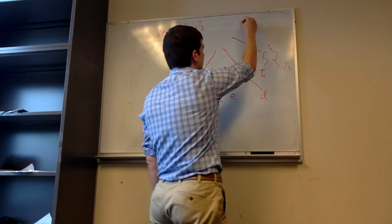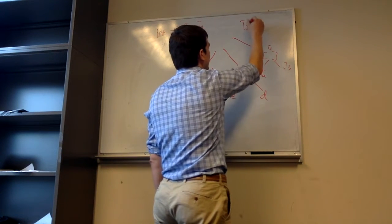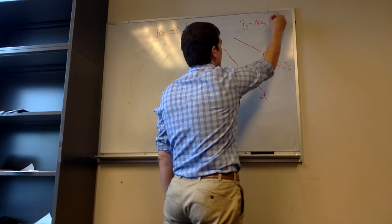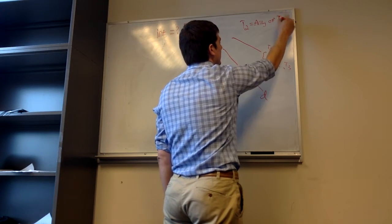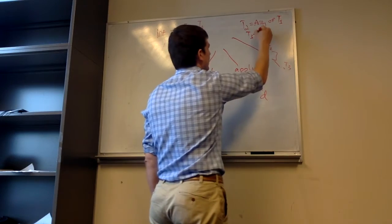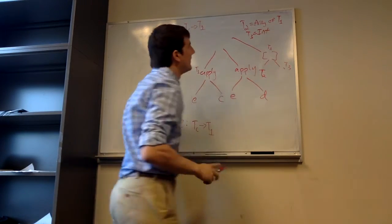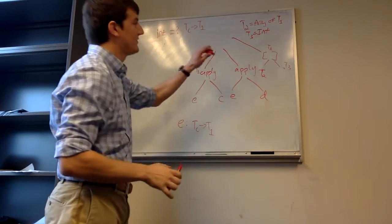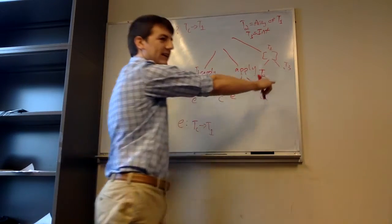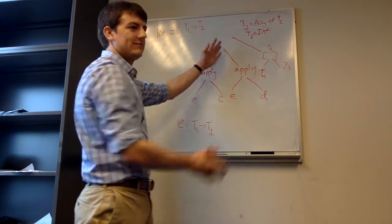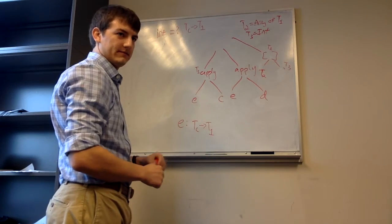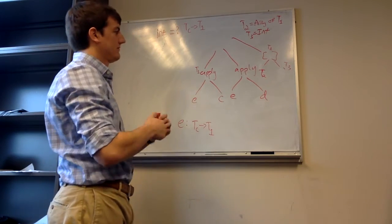T2 is an array — an array of type T1. And T3 is an integer. And these have to hold. If the type of T3 is not an integer, this doesn't type check. So just to double check: T3 cannot be a function that returns an integer.